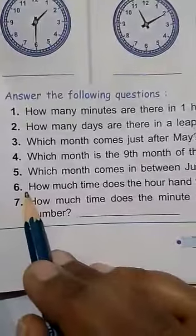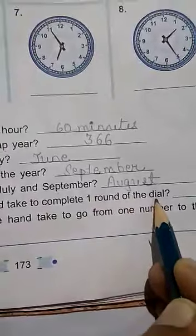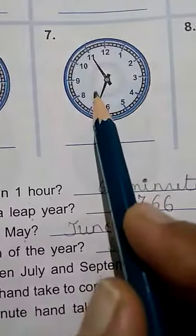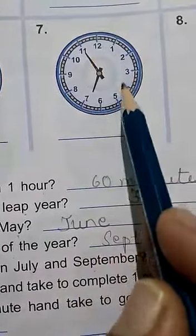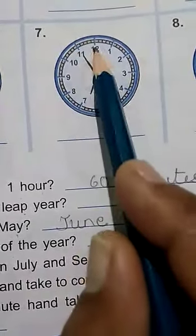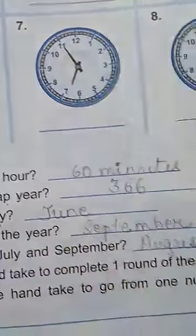Then, sixth question, how much time does the hour hand take to complete 1 round of the dial? Suppose this is the clock, this is the hour hand. To take 1 round of the clock, the time taken by the hour hand is 12 hours. So you will write here 12 hours.